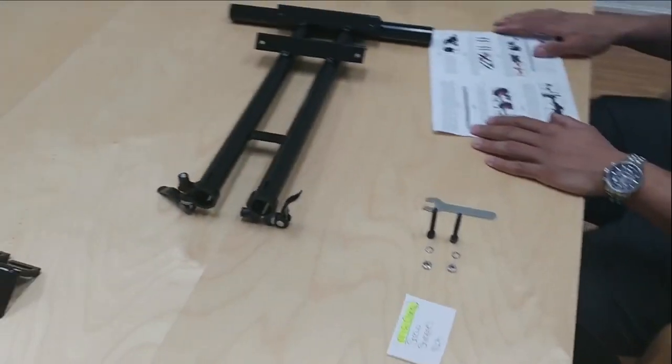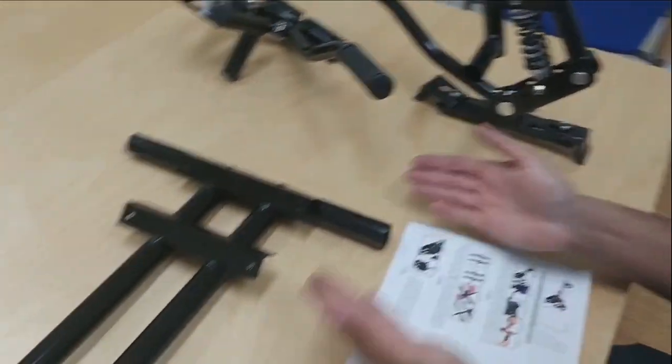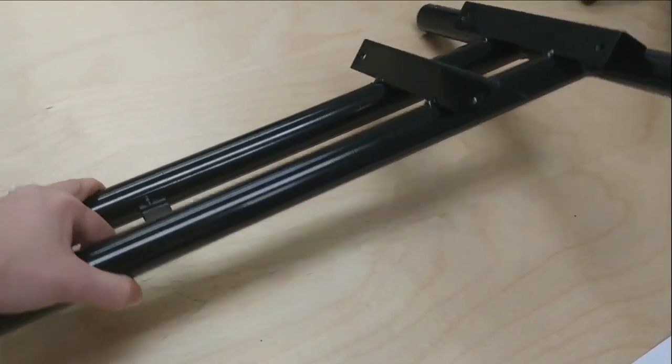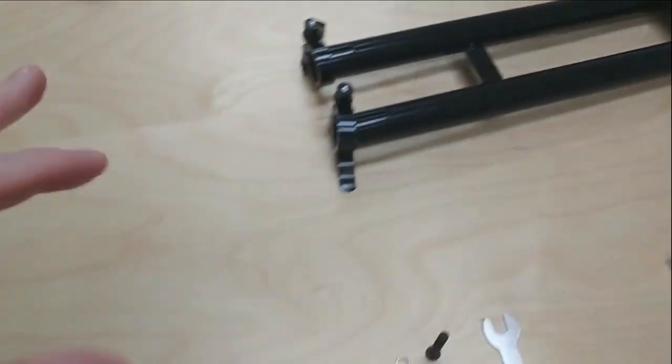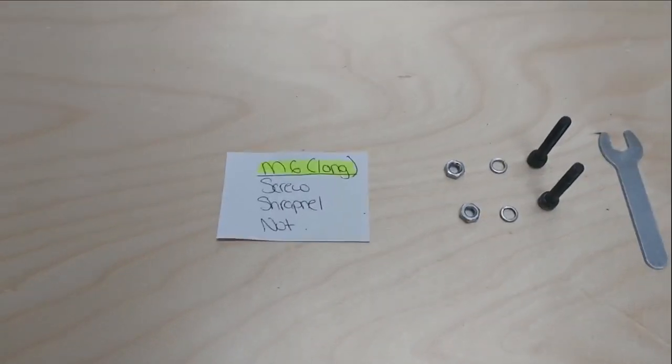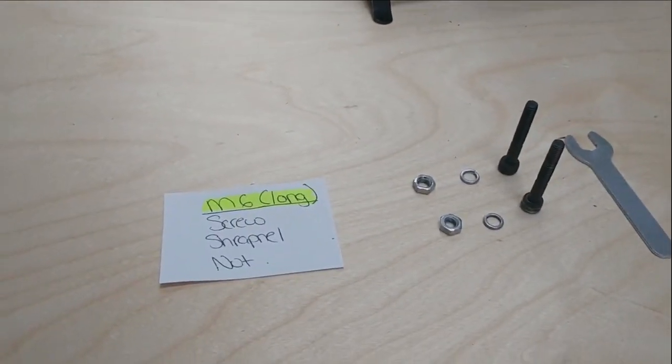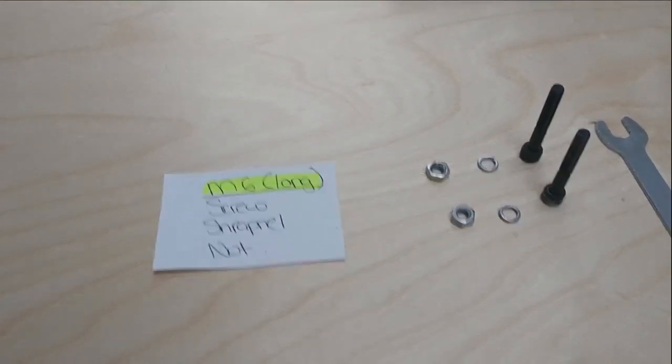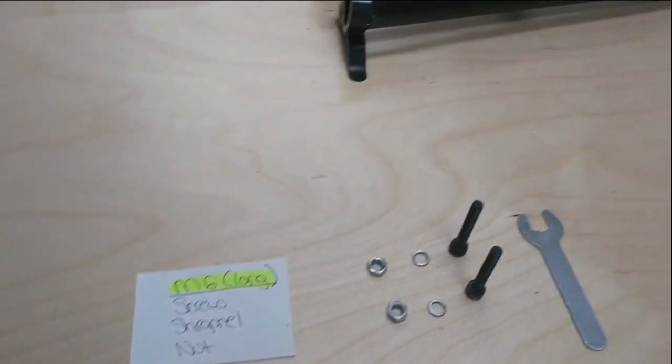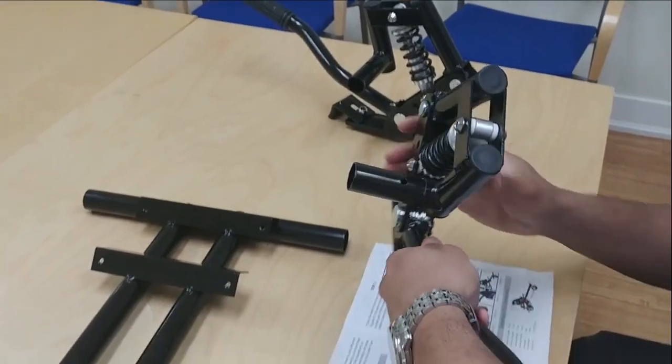And now we are going to assemble the shocks to the front end base. This is the right side up here. And here are the parts that you need in order. We've got the M6 long. You will notice there are two M6 screws, with these we are working with the long, and then your two shrapnels and nuts, and here's the shocks here.